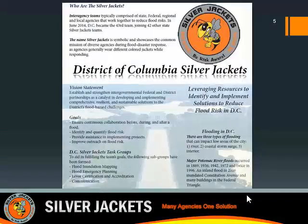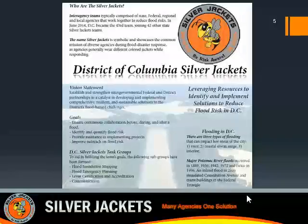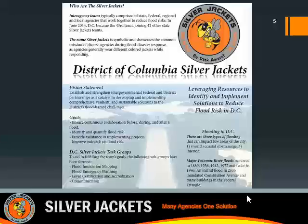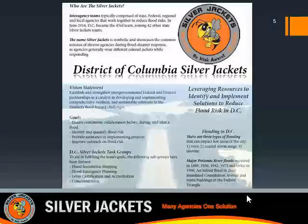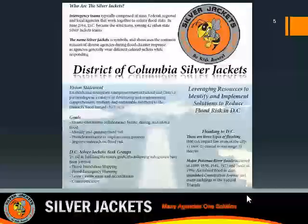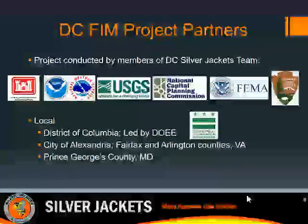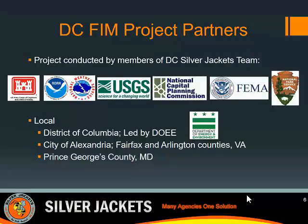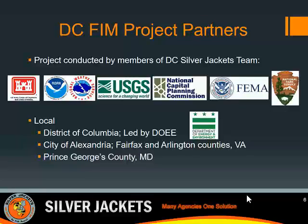The District of Columbia was the 43rd team to be established, and there are now 46 state teams plus the District of Columbia. Both Maryland and Virginia also have Silver Jackets teams. One of the goals of the teams is to work together, leverage resources, and implement flood risk management projects. The DC Silver Jackets agencies involved in the mapping project include all of the listed federal agencies along with the District of Columbia, led by the Department of Energy and Environment, and neighboring Virginia and Maryland counties and cities.